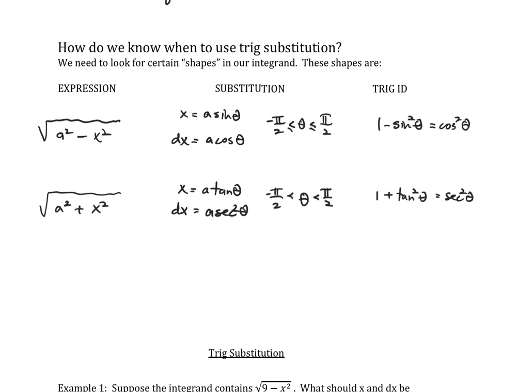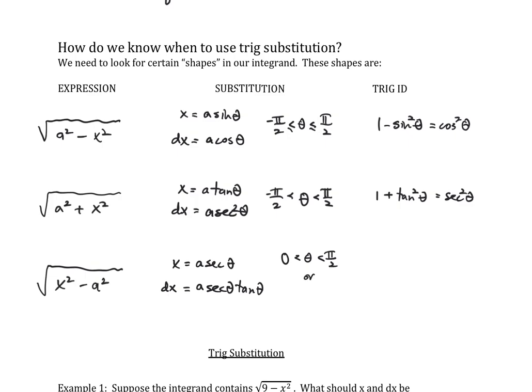The last general shape is the square root of x squared minus a squared. Our substitution here is x equals a secant theta, and dx equals a secant theta tangent theta d theta. The domain of secant when restricted splits into two parts: theta between 0 and pi over 2, or theta between pi and 3 pi over 2. The trig identity we'll use is secant squared theta minus one equals tangent squared theta.